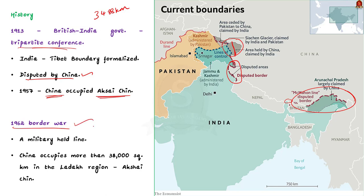After the 1962 war, a boundary came into existence known as the Line of Actual Control. Note that China occupies more than 38,000 square kilometers in the erstwhile state of Jammu and Kashmir in the Ladakh region — this region is known as Aksai Chin. You can see this disputed area in the image shown here.